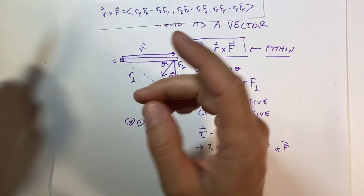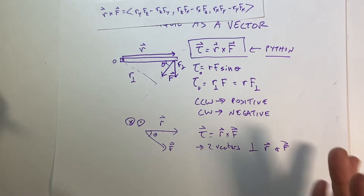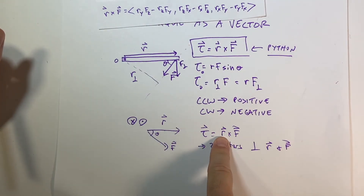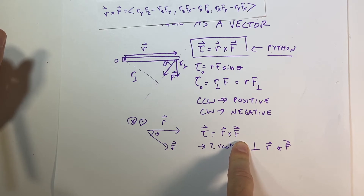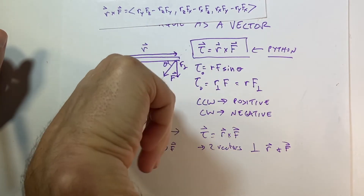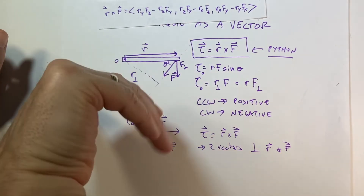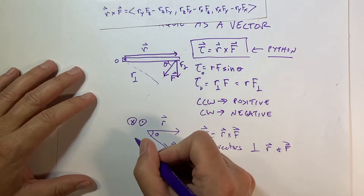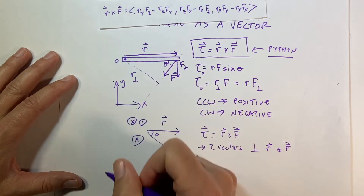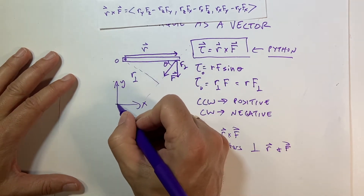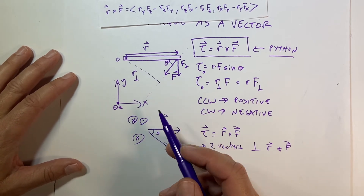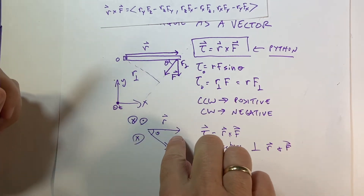Now use your right hand — put down your pencil first. Let your fingers curl through vector r and then f in the smallest possible angle. Your thumb points in the direction of the torque. Going through r then f, the torque would be into the paper, which is the negative z direction. Recall: in a right-handed coordinate system, x cross y gives the z direction.